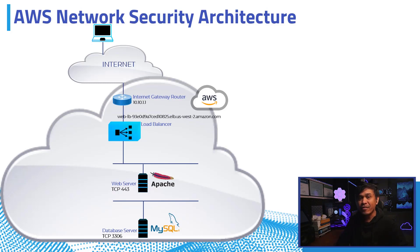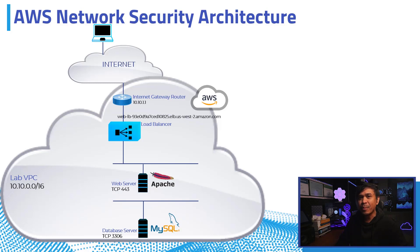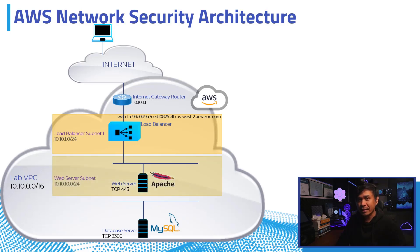Let's talk about VPC or Virtual Private Cloud, and the subnets allocated for each component. We have a custom VPC named LabVPC with a CIDR of 10.10.0.0/16. From this CIDR, we created three subnets: the load balancer subnet 1 with 10.10.1.0/24, the web server subnet with 10.10.10.0/24, and the database subnet with 10.10.20.0/24.